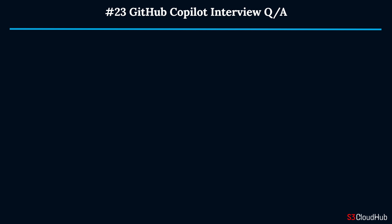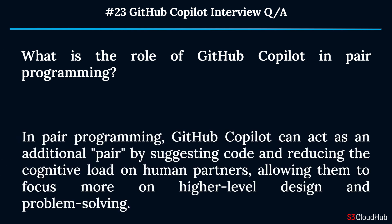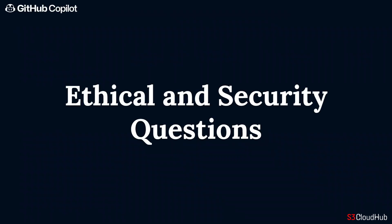Question twenty-three: What is the role of GitHub Copilot in pair programming? In pair programming, GitHub Copilot can act as an additional pair by suggesting code and reducing the cognitive load on human partners, allowing them to focus more on higher-level design and problem solving. The fourth topic is ethical and security questions.